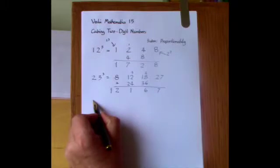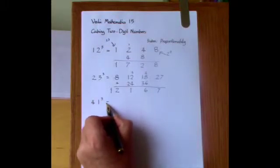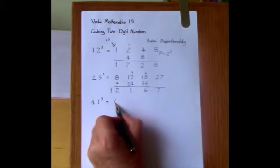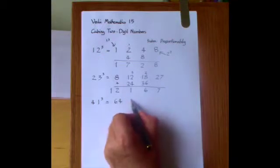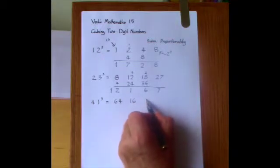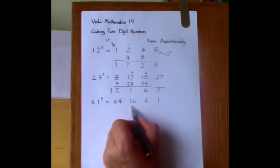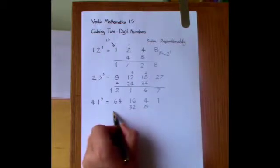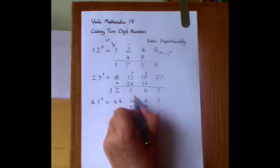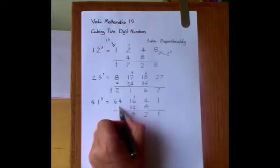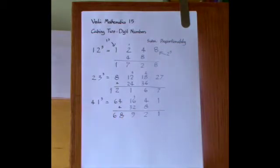We can have a decreasing ratio as well. For the next example, 41 cubed, we start with the cube of 4, which is 64. And then take the ratio 4 to 1, so we're quartering this to give 16. And then a quarter of 16 is 4, and then 1. We double the 16 and double the 4, and then simply add up. We have 1, 2 with 1 to carry, making 49, and then 68. The answer is 68,921.